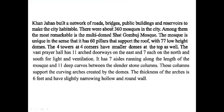Khan Jahan Ali built a network of roads, bridges, public buildings, and reservoirs to make the city habitable. There were about 360 mosques in the city; among them the most remarkable is the multi-domed Shatgombuj Mosque. The mosque is unique in that it has 60 pillars supporting the roof with 77 low-height domes. The four towers at four corners have smaller domes at the top as well. The vast prayer hall has 11 arch doorways on the east and seven each on the north and south for light and ventilation. It has seven aisles running along the length of the mosque and 11 deep curved bays between the slender stone columns, which support the curved arches created by the domes. The thickness of the arches is six feet with slightly narrowing hollow and round walls.